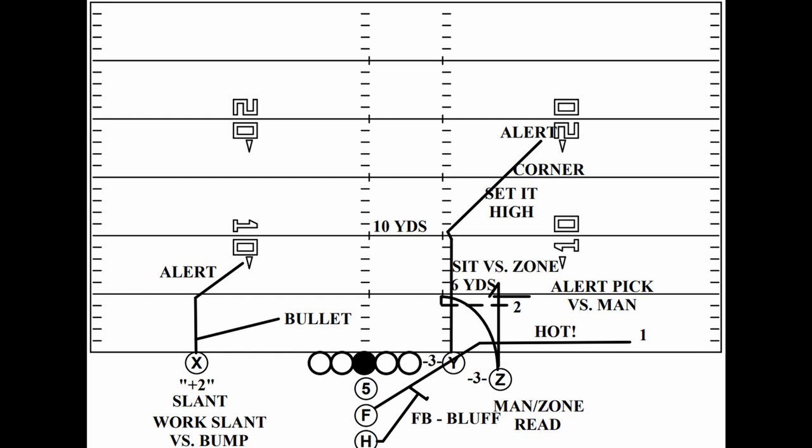The snag concept utilizes both a vertical and a horizontal stretch. Out of trips, snag consists of a 5-6 yard snag route from the number 1 receiver, and this route needs to sit as soon as the conflict or flat defender crosses their face — he's replacing that defender. If the snag route encounters man coverage, they will pivot out of the break and back towards the sideline. The next route is a corner from the number 2 receiver. Lastly, you have an arrow at 2-3 yards from the number 3 receiver or the running back out of the backfield.